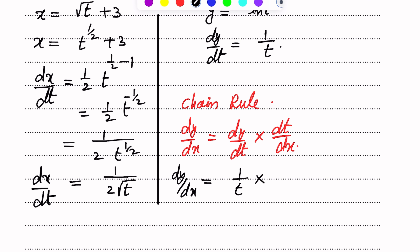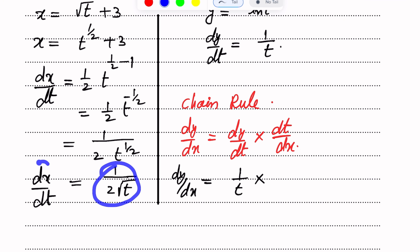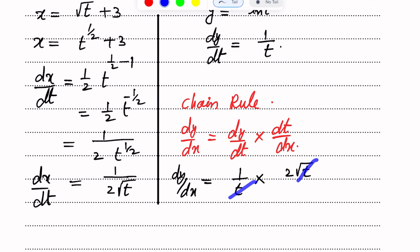Now we have both dx over dt and dy over dt. So we apply the chain rule: dy over dx equals dy over dt multiplied by dt over dx.